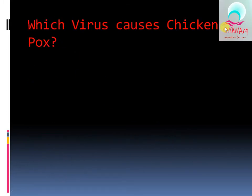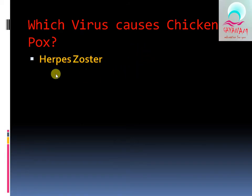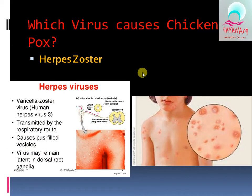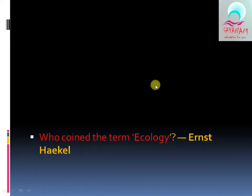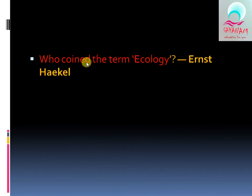Vanadium was discovered by a Swedish chemist. Deficiency of Vitamin K causes non-clotting of blood. Which virus causes chickenpox? It is Herpes zoster. Who coined the term ecology? It is Ernst Haeckel.